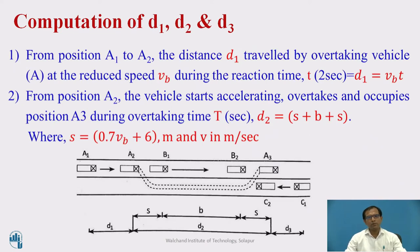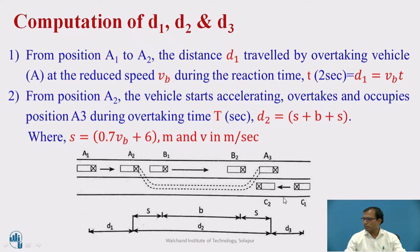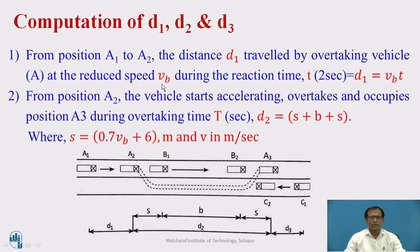In the previous session, we learnt how to calculate the distances D1 and D3. In this session, we will learn how to calculate the distance D2. The overtaking side distance is the minimum distance available in front of the driver for safe overtaking operation, considering the opposite vehicle. The total overtaking side distance equals D1 plus D2 plus D3.